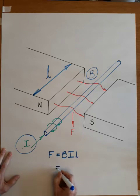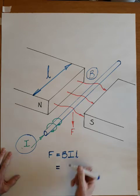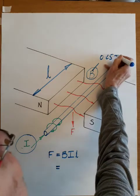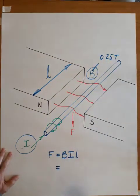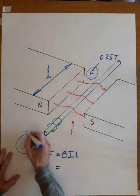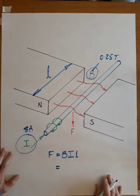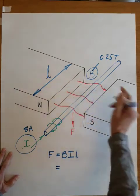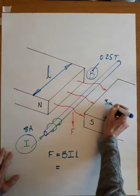Let's put some numbers in. Supposing I say that the flux density is 0.25 Tesla, and we have a current of say 8 amps. And let's suppose the length of the conductor within the field is 3 metres.